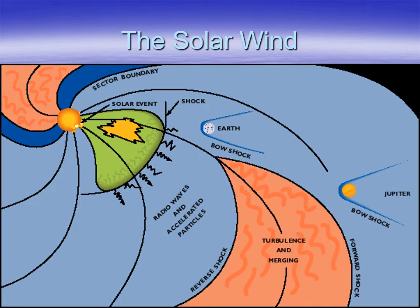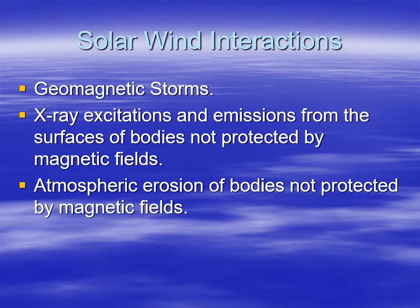That means there's all these particles, particulate stuff, electromagnetic radiation — all kinds of things going across the solar system carrying an electric charge. They run into the magnetic fields of the planets, get deflected around the planets, and so that gives you the solar wind interactions, which can give rise to geomagnetic storms when you get a giant blast of solar wind.